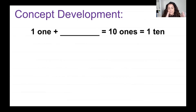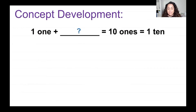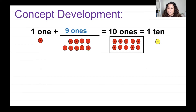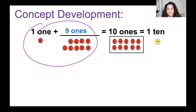Now I have a number sentence with two equal signs, so they all have to balance. I have 1 one and I need to add something to make it equal these. Let me draw a picture: I have 1 one, then 10 ones, then 1 ten. That's not balanced. I know my rainbow facts — if I have 1 one, what's on the other side of the rainbow to make a 10? I need 9 ones. So 1 plus 9 equals 10. That means 10 ones is equal to 10 ones is equal to 1 ten — a true statement. They all balance.